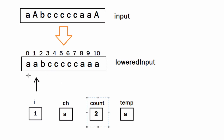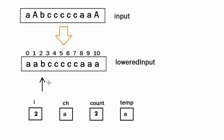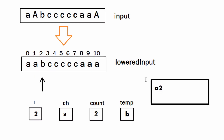Next we move to the character B, so i becomes 2. We take B into the temp variable and compare ch and temp. They are not equal, so we print the value of ch and its count — displaying A2 on the screen. After that, we store the value of temp inside ch, so ch now holds B, and we reset count to 1.